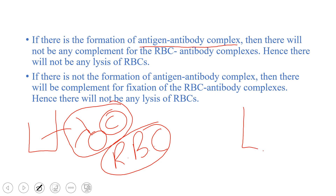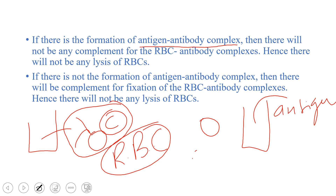In the negative case — for example, if the patient doesn't have the antibody — when we put in the antigen, there is only free antigen with no antibody to form a complex. The complement proteins won't bind to the antigen alone, because complement binding requires an antigen-antibody complex, not antigen alone or antibody alone.